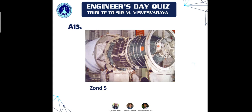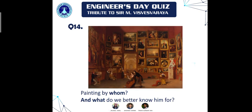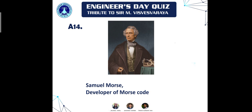Question fourteen: identify a painting — who painted it and what are they better known for? This is an easy one. The answer is Samuel Morse, and he is better known as the developer of Morse Code.